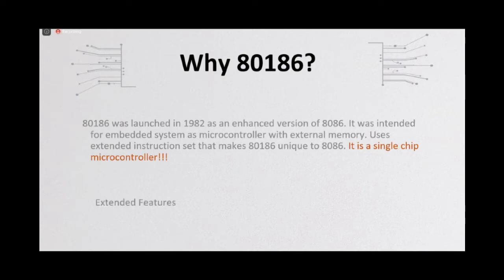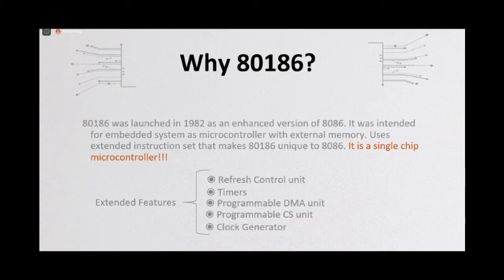So, compared to 8086, 80186 has some extended features like refresh control units that actually refresh the row addresses at interval programmed timers, the programmable DMA unit, programmable CS unit will be discussed in the block diagram portion, and the clock generator. 80186 has an internal clock generator that has 6 to 25 megahertz clock speed.